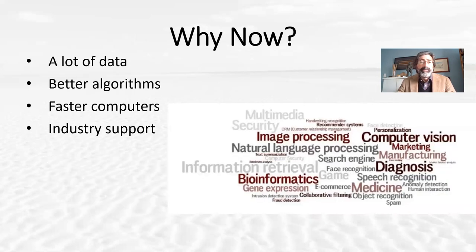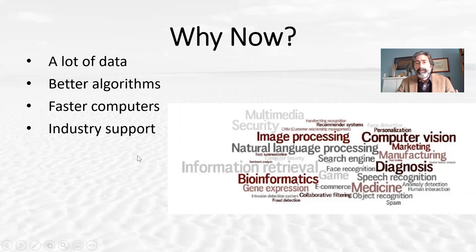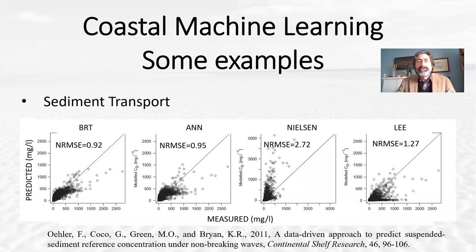Why now? At the moment we are living in the big data era. We have a lot of data available, and journals now require data submission so more data is becoming available. We also have much better and more powerful algorithms for machine learning, and faster computers — which always helps — and there is a lot of industry support because they see the potential. Looking at the fields where machine learning is mostly used, our field is not mentioned — physical sciences are not — but let me give you some examples of applications.